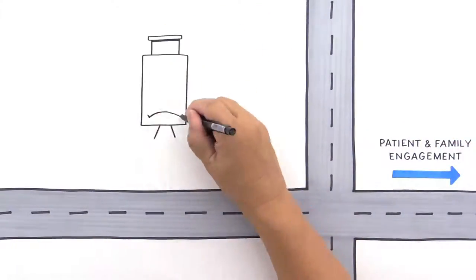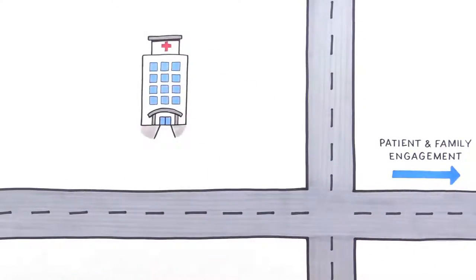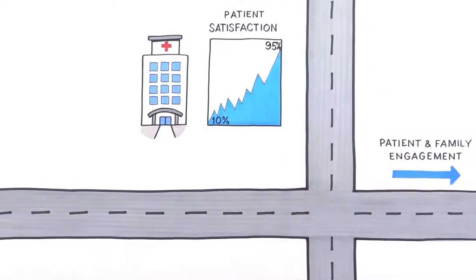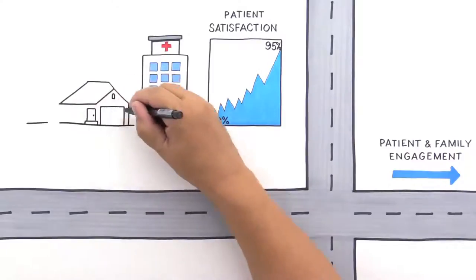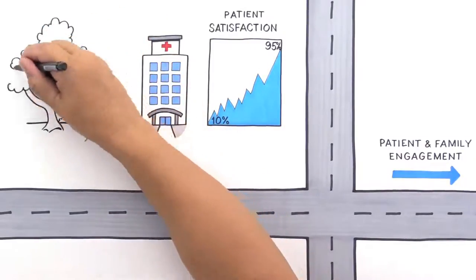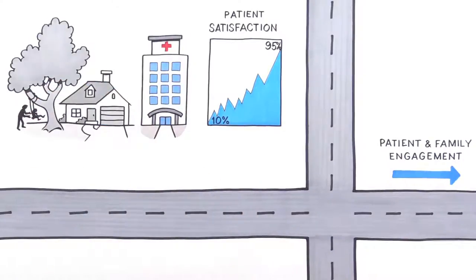For example, at a leading medical center, implementing patient and family engagement strategies on one hospital unit led to a jump in patient satisfaction scores from the 10th to the 95th percentile. And one study found that when patients got objective information on treatment options, about 25 percent of individuals selected a more conservative, evidence-based treatment than was originally proposed, which resulted in an average savings per treatment of more than $11,000.